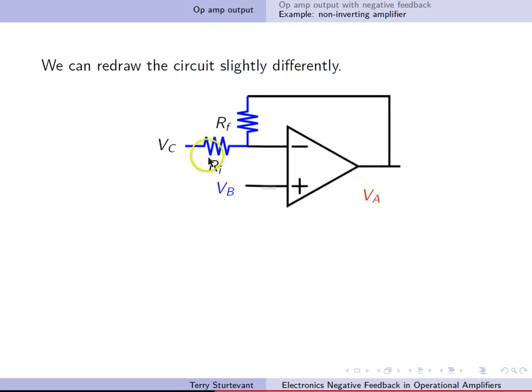Now we can draw it slightly differently. All that's happened here is we've bent this resistor up and put VC up here instead of down here. So we haven't changed the circuit.